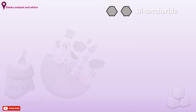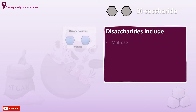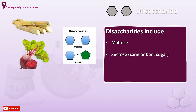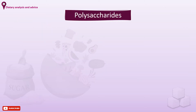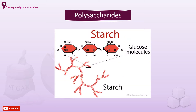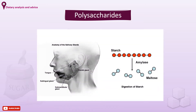Disaccharides — saccharides formed of two molecules — include maltose, sucrose (which can come from cane or beetroot sugar), and lactose, which is the sugar in milk. Polysaccharides are formed of more than two molecules, like starch, which is composed of chains of glucose molecules and is not readily broken down by the oral flora.